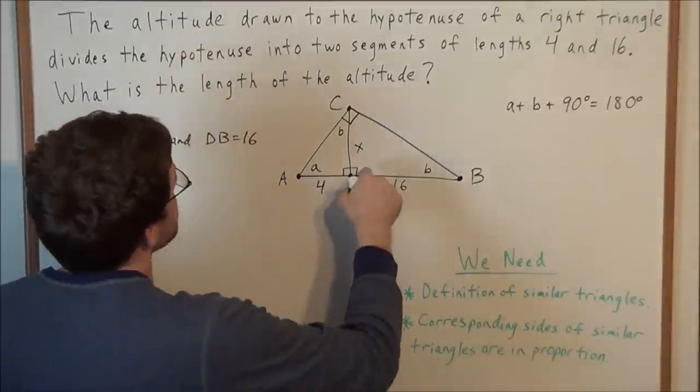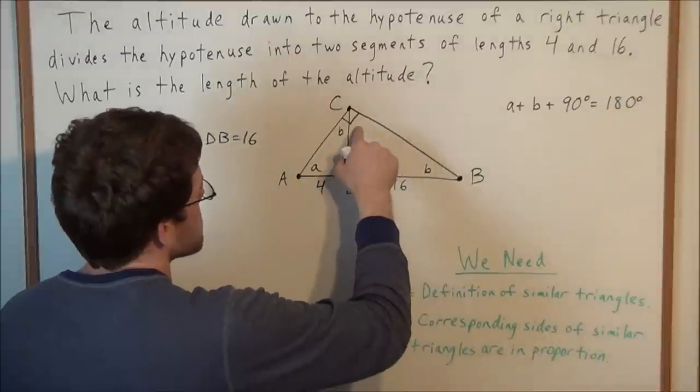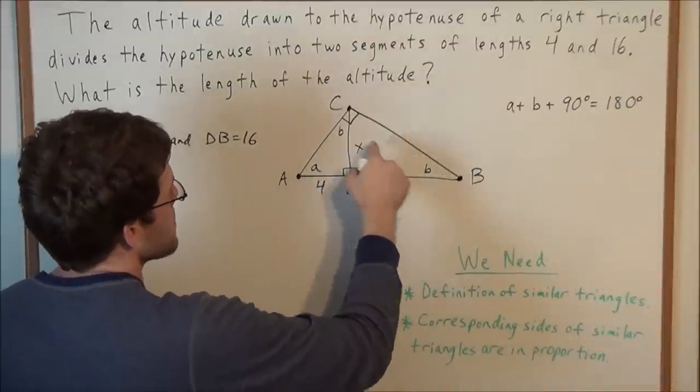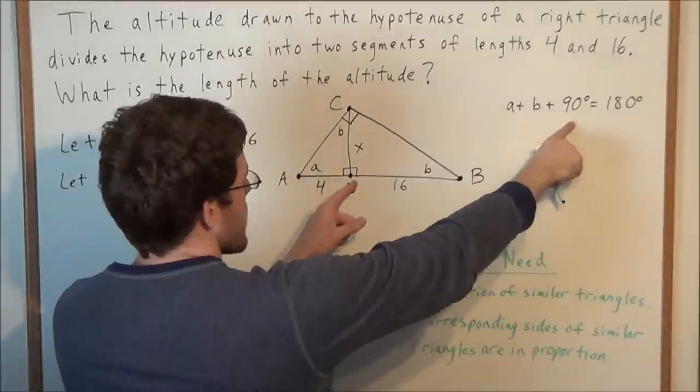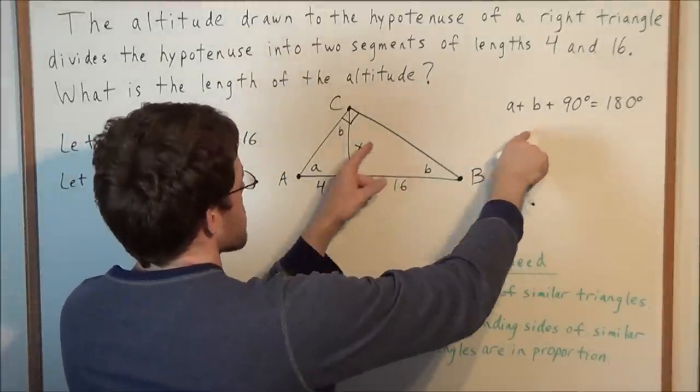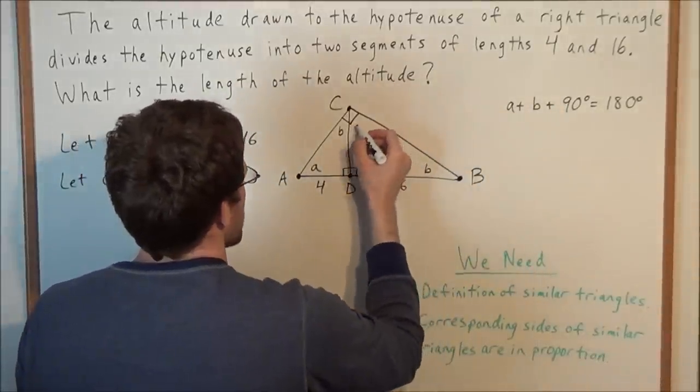So now, by similar reasoning, we could say that this missing angle DCB would have to be angle A. Because we have a 90 degree angle, we have angle B, so the missing angle has to be A.